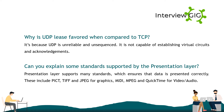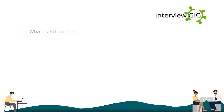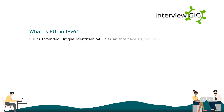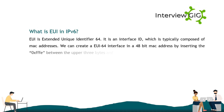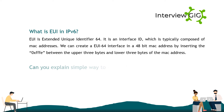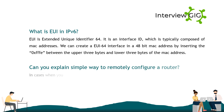What is EUI-64 in IPv6? EUI-64 is an extended unique identifier interface ID which is typically composed of MAC addresses. We can create an EUI-64 interface from a 48-bit MAC address by inserting zeros between the upper three bytes and lower three bytes of the MAC address.